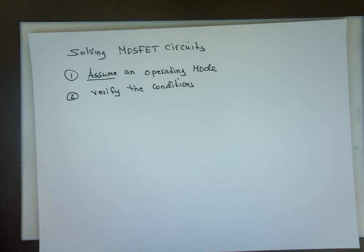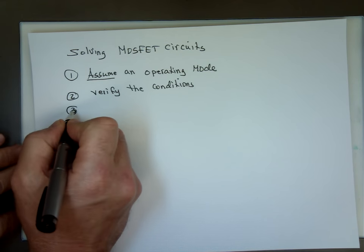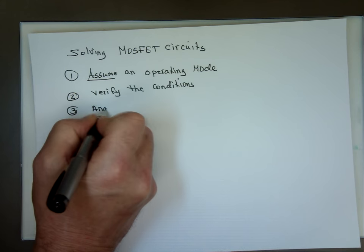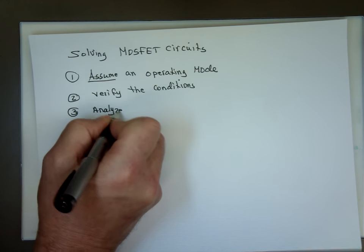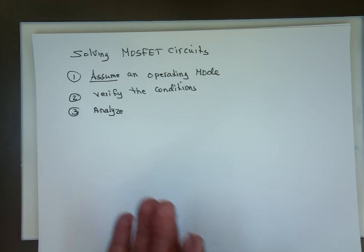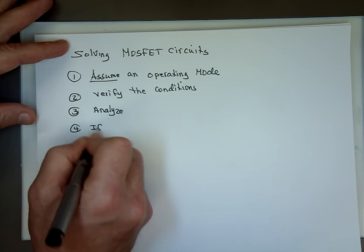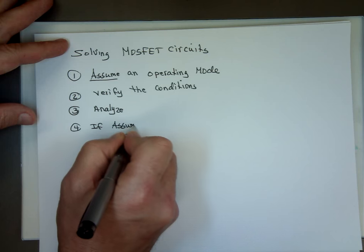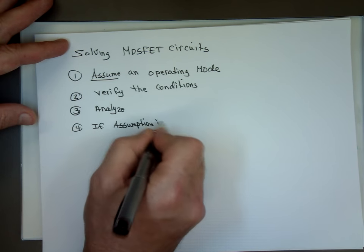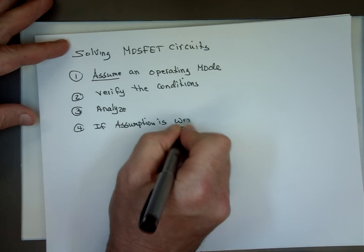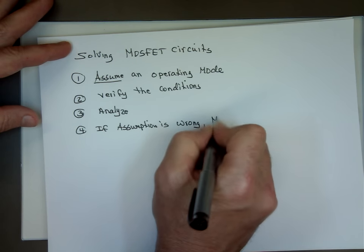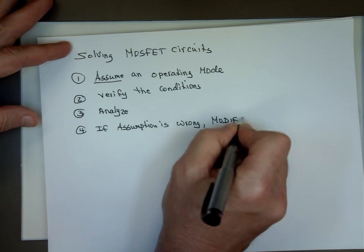Now after we verify them, we need to analyze the circuit. And again, if we find out we made a wrong assumption, modify the assumption. So if assumption is wrong, what do you want to do? Modify the assumption.